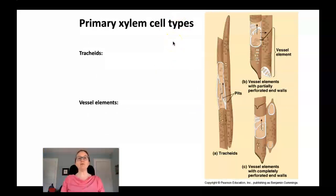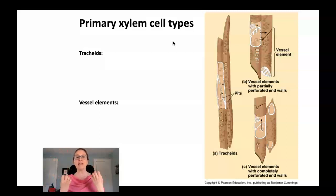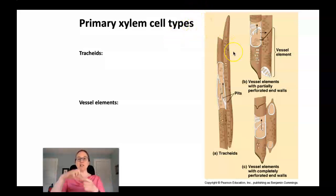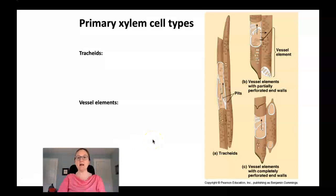There are two primary xylem cell types, both dead at maturity, meaning they have no cytoplasm, nucleus, plastids, or anything except thick secondary cell walls containing lignin. Since lignin is water impermeable, there must be holes or pits in the cell — sometimes pits, sometimes larger holes called perforations — for water to move through. The first type is tracheids, which tend to be thinner and have adjacent pits between neighboring tracheid cells, allowing water to move from one cell into the next. Tracheids are very common in gymnosperms and are the only kind of xylem tissue found in conifers.